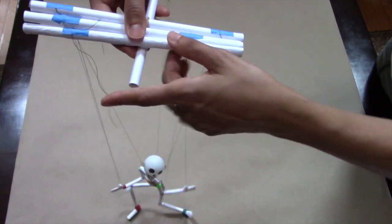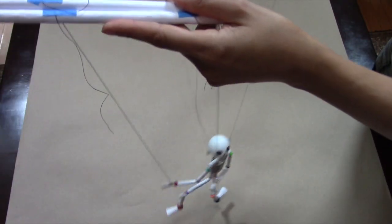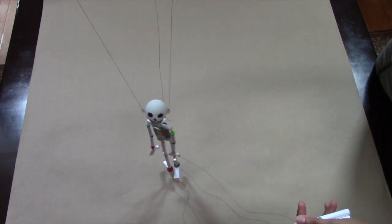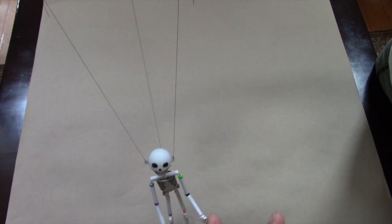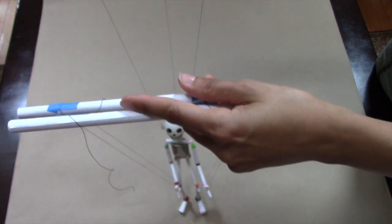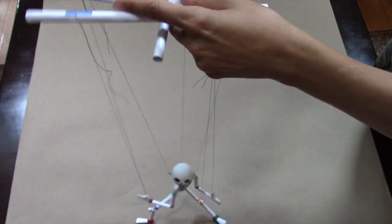Time to check to make sure the strings are the correct lengths. You want to make sure that when you hold the crossed control rods parallel to the ground, the strings to the head and back are all straight and tight. Do the same thing to check the control rod for the legs.